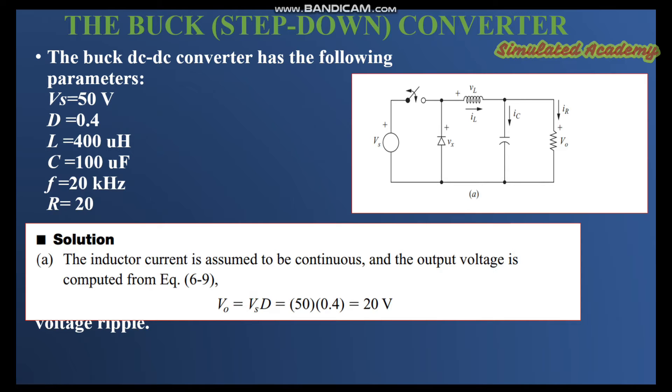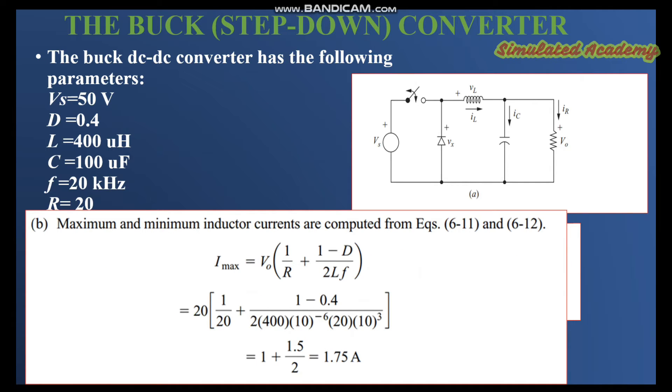Now let's find the maximum and minimum current passing through the inductor L. First of all I will find the maximum current. The maximum current passing through an inductor L is calculated by this formula where Imax is equal to V0 times 1 divided by R plus 1 minus duty cycle divided by 2LF.